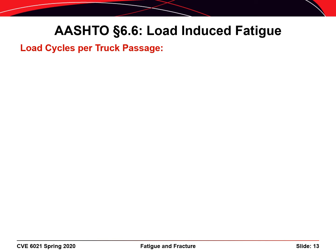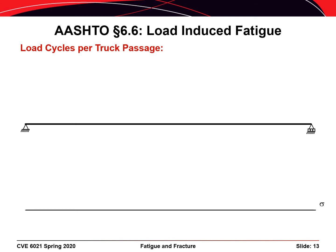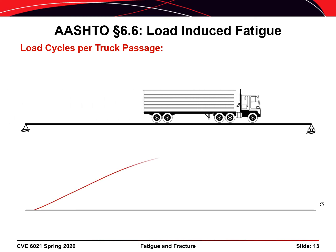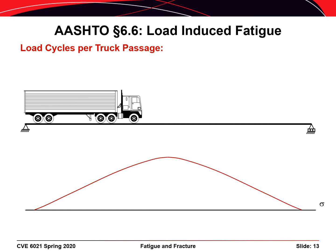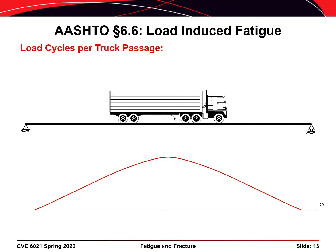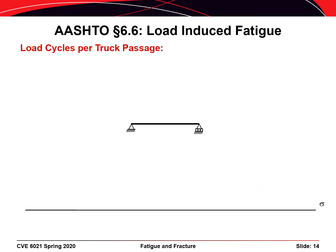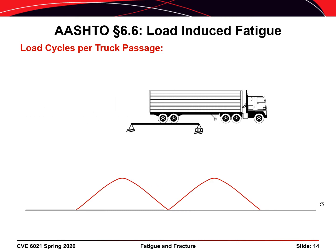The last parameter to consider is the lowercase n, which is the number of stress cycles per truck passage. Consider a truck passing over a relatively large bridge and looking at the mid-span bending stress sigma as the truck crosses. A fatigue detail at mid-span would experience one stress cycle. Now consider a truck passing over a relatively small bridge — the fatigue detail at mid-span would experience two or possibly three stress cycles because the span length of the bridge is actually short relative to the axle spacing of the truck.